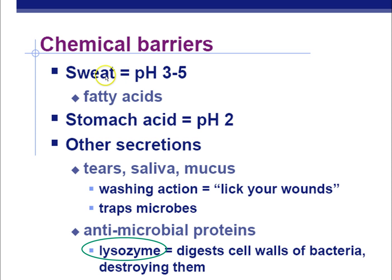In the first line of defense, we have some chemical barriers to prevent bacteria from growing on our skin. Sweat has a low pH — around 3 to 5 — which prevents bacteria from surviving well on it. Some bacteria can still survive on your skin, but they're limited by your sweat's low pH. Stomach acid is very low pH — around 2 — another chemical barrier that most bacteria cannot survive. We also have secretions with antimicrobial properties: your tears, saliva, and mucus all trap microbes. Think of snot and mucus as a glue trap for bacteria — when you blow your nose, anything trapped in that mucus gets out of your body.